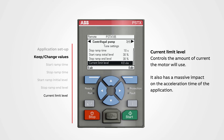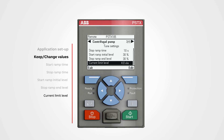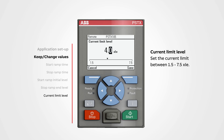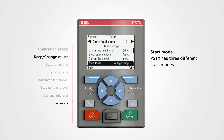Current limit level: the current limit controls the amount of current the motor will use and also has a massive impact on the acceleration time of the application. A low value will create a longer starting time, and a high number will decrease the starting time. But if the current limit is set too low, the motor will not be able to reach the top of ramp and the result will be that the motor will not start or get the application up to full speed. To change a value, push edit. We can set the current limit between 1.5 to 7.5 times IE. Use the navigation buttons to change the value, then push save.